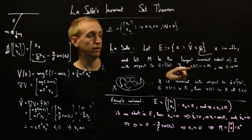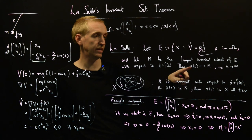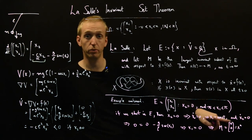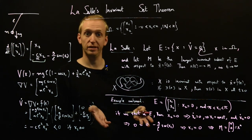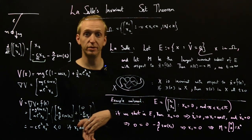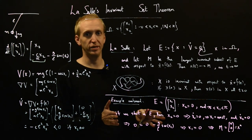Therefore, by LaSalle, x(t) is going to tend to M. As t goes to infinity, that means x(t) is going to tend to the equilibrium point in this case. And therefore, in addition, the system is asymptotically stable. If you go back and you look at the definition for asymptotic stability, you'll see that's exactly what it means.